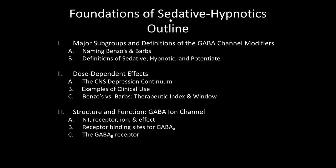Let's jump into the sedative hypnotics. We're going to start with a foundational lecture that hits three main important topics that have a lot of overlap between all the drugs. You should know that the sedative hypnotics are GABA channel modifiers, and GABA is an inhibitory neurotransmitter which leads to CNS depression. We'll start by talking about the major subgroups and definitions, the dose-dependent effects, and the structure and function of the GABA ion channel.